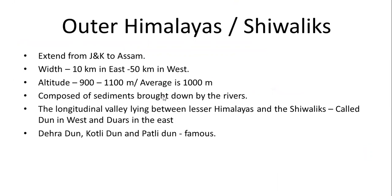The Outer Himalayas are otherwise called Shivaliks. They extend from Jammu and Kashmir to Assam. The width is around 10 kilometers in the east and 50 kilometers in the west, with an altitude of 900 to 1,100 meters and an average of around 1,000 meters. They are composed of sediments brought down by rivers. There is a new term here: dhun, or duar — the valley lying between the Lesser Himalayas and the Shivaliks is called dhun in the west and duar in the east. Dehra Dun and Patli Dun are famous examples.